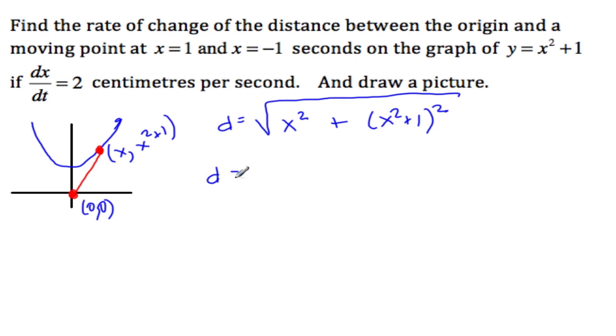And now simplify this a little bit. We'll get the square root of, expand this, we'll get x⁴ + 2x². And we have another x², so that's 3x². And then in the end there we'll have a 1.